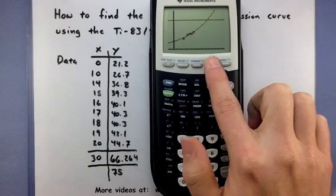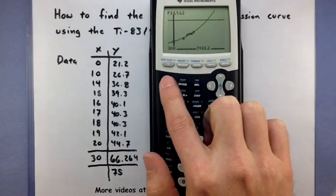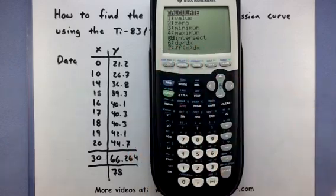So this horizontal line here represents when Y will equal 75. Now we'll go into second and calc and select our intersection feature. So second, calc. Option number five says intersect. So I'm going to press enter.